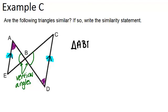We can write our similarity statement. Triangle ABE is similar to triangle D, because D was congruent with A, B, and then C. And our reason is AA similarity.